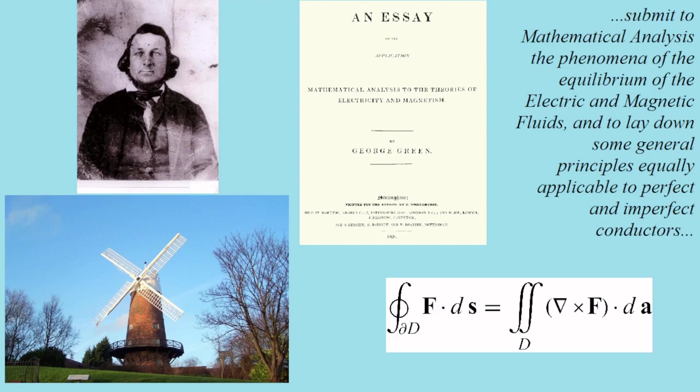Sadly, Green's work was largely unknown in his life. He only sold 51 copies of his essay, mostly to friends who didn't really get it. But after his premature death, Lord Kelvin found a copy and expanded on it. The essay includes what is now known as Green's theorem for multivariable calculus.